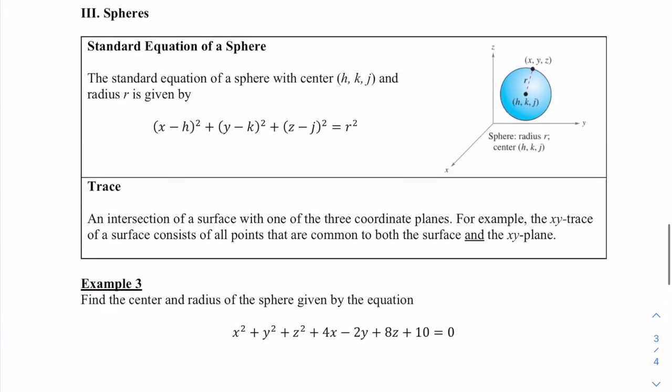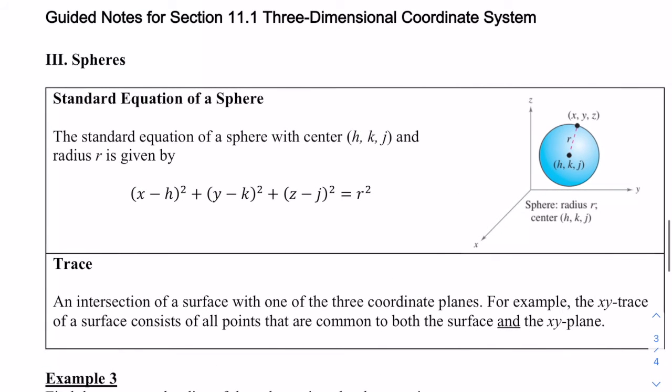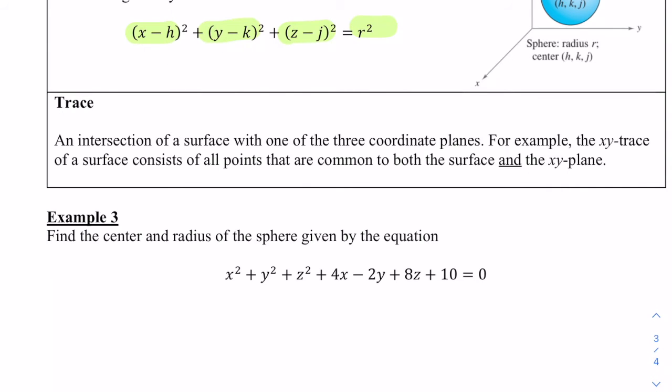Let's move on to spheres. Thinking about a three-dimensional coordinate system, now we can have three-dimensional figures. The center is now (h, k, j). We're just adding that third dimension in the equation. Instead of finding the zeros, we're going to find the trace, and that's the intersection of the three-dimensional figure with one of the three coordinate planes.